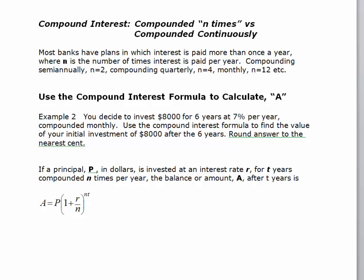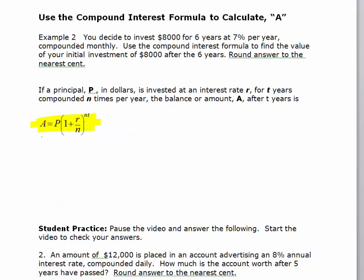And so here's the example. It says you decide to invest $8,000 for 6 years at 7% per year compounded monthly. Use the compounded interest formula to find the value of your initial investment after the 6 years and round your answer to the nearest cent. So the formula for compounded interest is right here. This is A equals P times 1 plus R over N to the Nt. Again, if you have a chance to look over that proof, you'll see where this formula comes from. And so our job right now is to figure out how do we use this formula and how do we enter it correctly on our calculator. So we want to identify the different variables. And so since there are more here, I'm going to list each one.